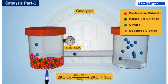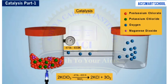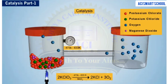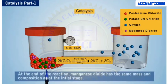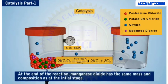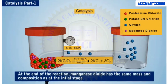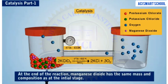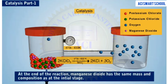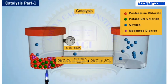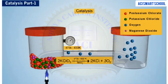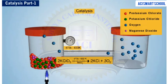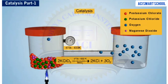You will observe that manganese dioxide is not consumed in the reaction. That is, at the end of the reaction, manganese dioxide has the same mass and composition as at the initial stage. Here, manganese dioxide has facilitated the reaction without itself being consumed.